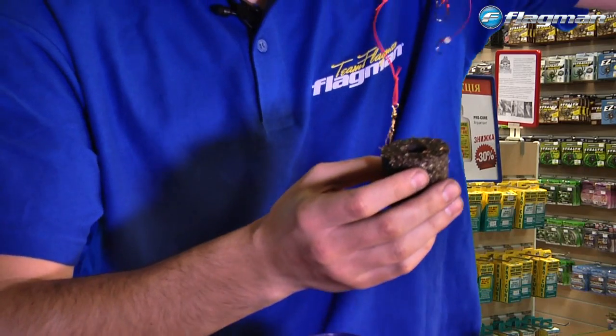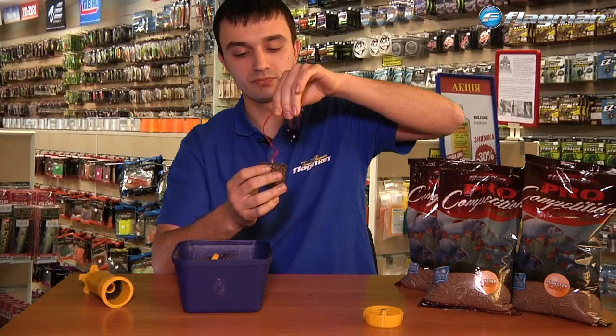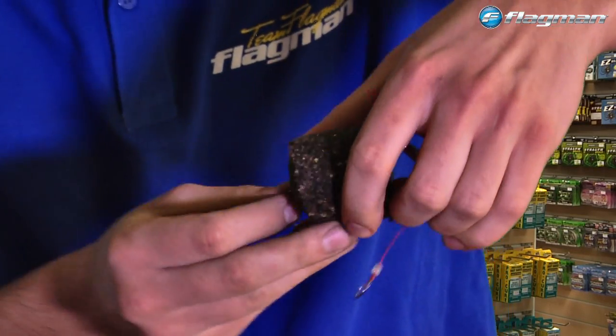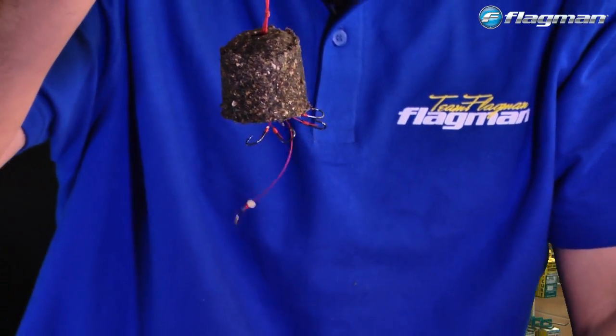Берем гранулу, берем специальную оснастку, вставляем гранулу в оснастку. Насаживаем наживку и ловим рыбу.